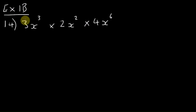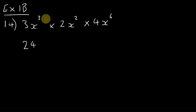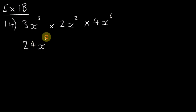So it's just a case of times the constants: 3 times 2 is 6, 6 times 4 is 24. Now we just add the indices: 3 plus 2 is 5, plus 6 is 11. There you go, next question.